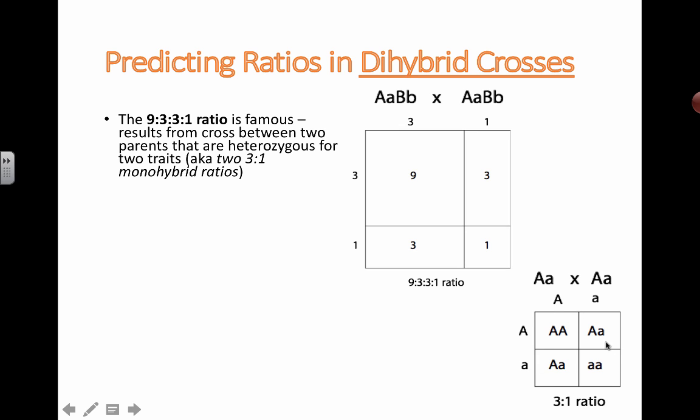Notice the phenotypic ratio that you end up with is three of them will show the dominant trait and only one of them out of four will show the recessive trait, the physical trait. We're talking about the phenotype, not the actual genotypes.